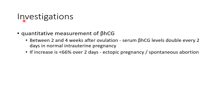The two main investigations in ectopic pregnancy are beta-HCG measurement and transvaginal ultrasonography. Quantitative measurement of beta-HCG is necessary to diagnose ectopic pregnancy. Normally between two and four weeks after ovulation, serum beta-HCG levels double every two days in a normal intrauterine pregnancy. If the increase in beta-HCG is less than 66% over two days, we should suspect ectopic pregnancy or spontaneous abortion.